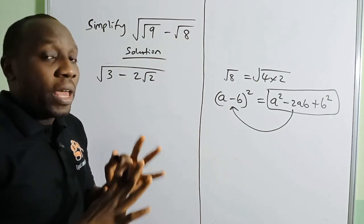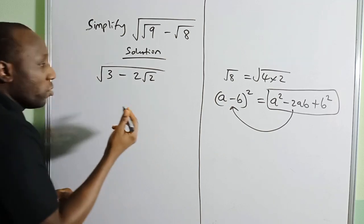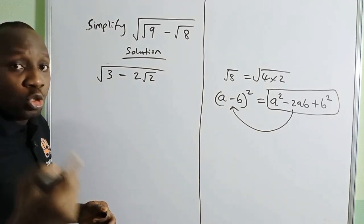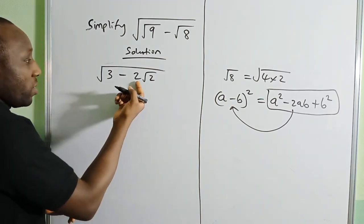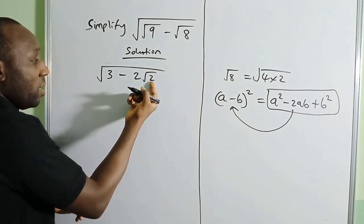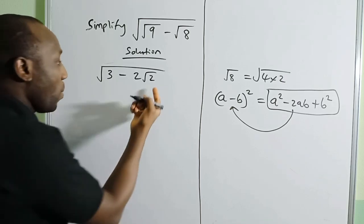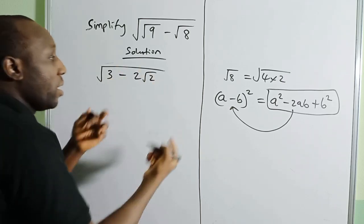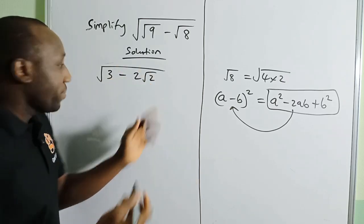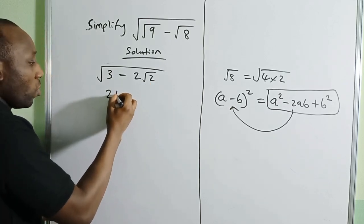So let's try something. 3 can be written as 2 + 1, because I have 2 here as the radicand, and I'm trying to express 3 to have 2. So that would be 2 + 1 - 2√2.